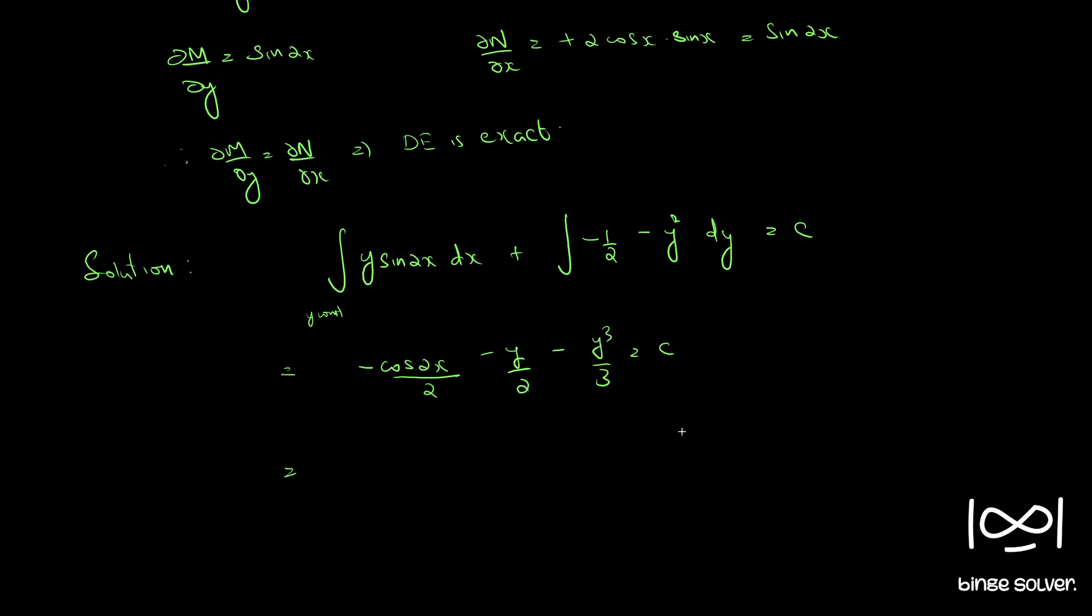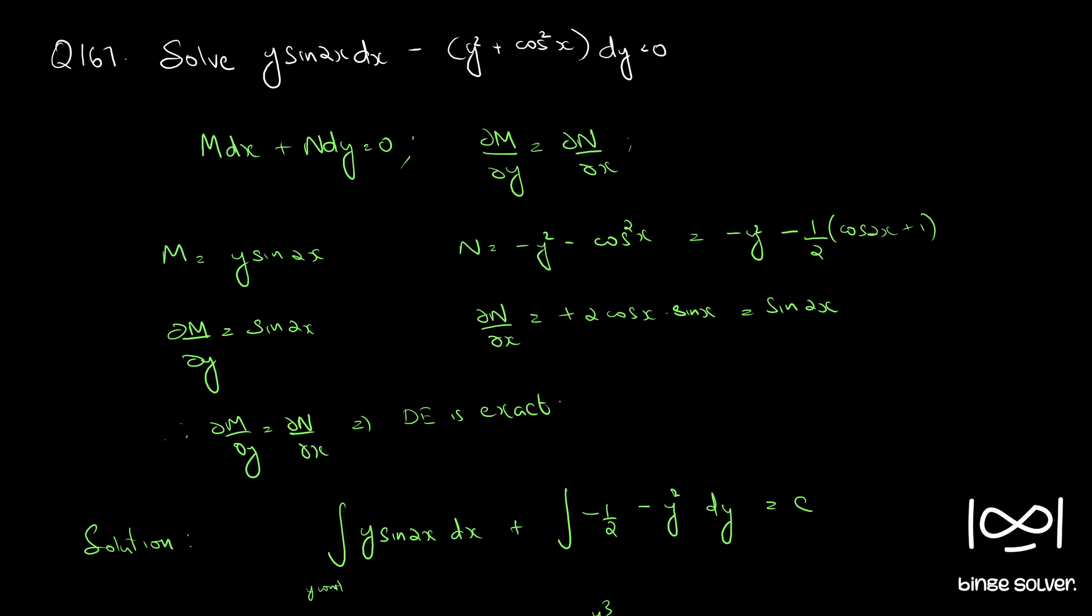So we have if you multiply throughout by minus 6 we have 3 cos 2x plus 3y plus 2y cube equal to c1 another constant. So this is the solution to question number 167.